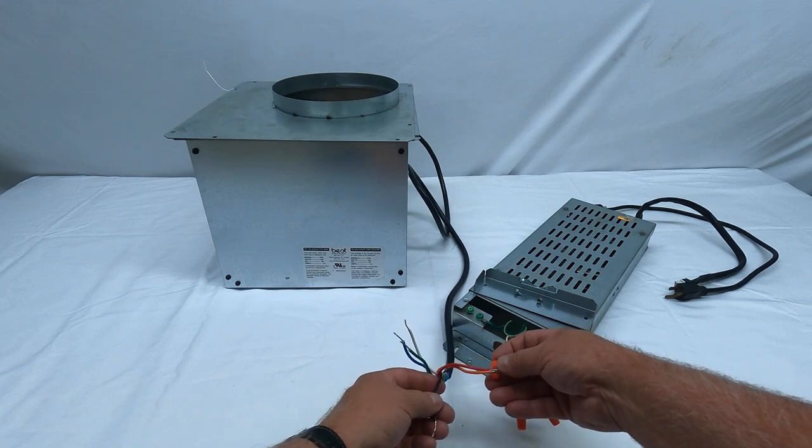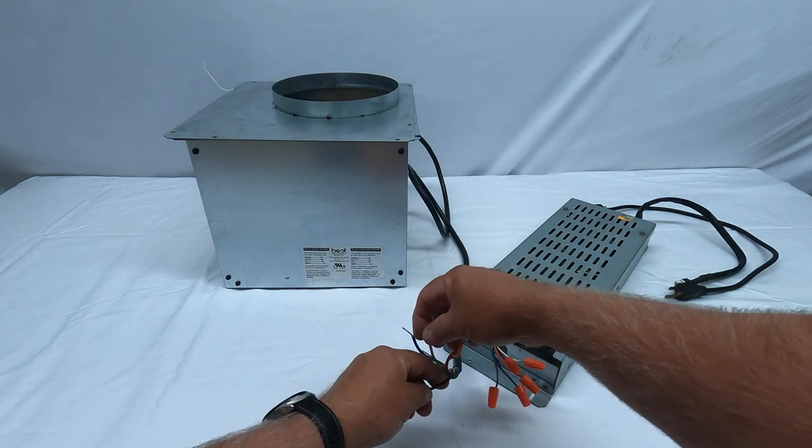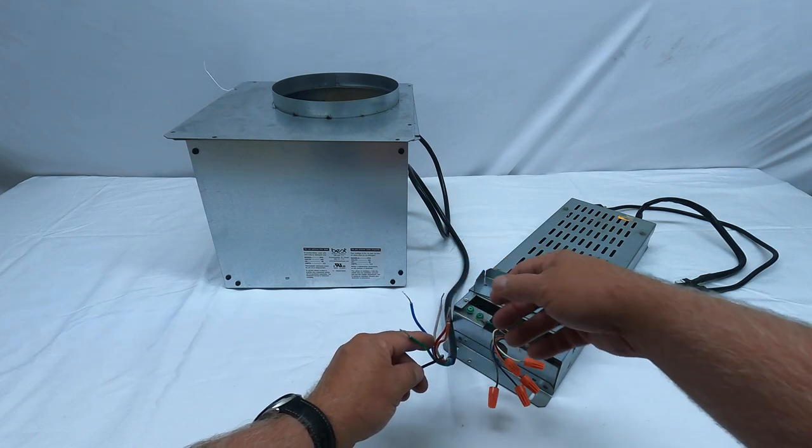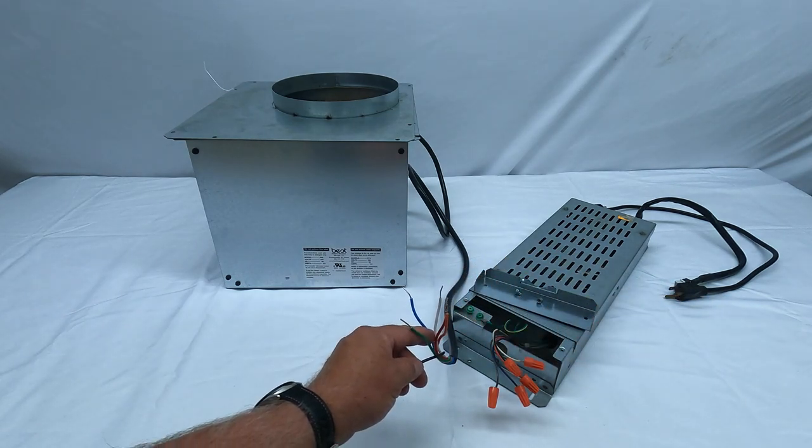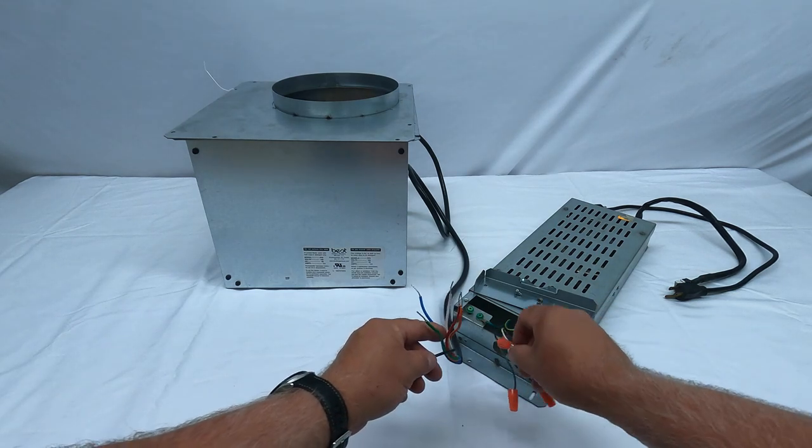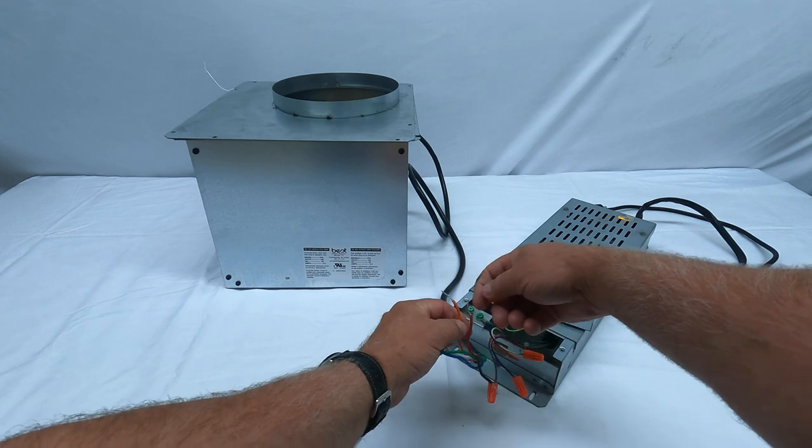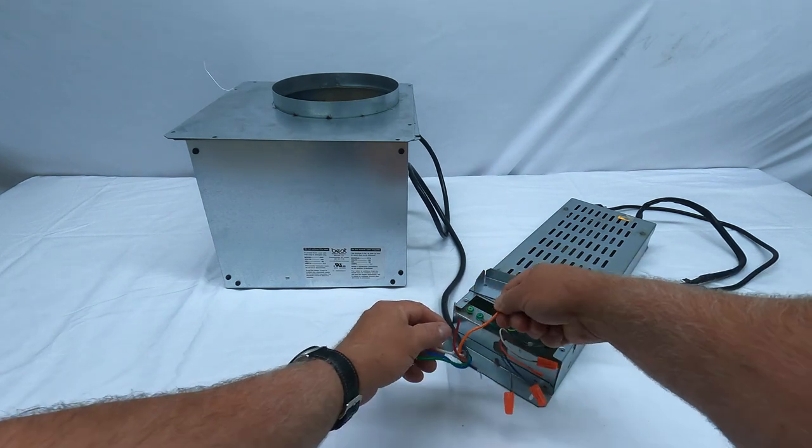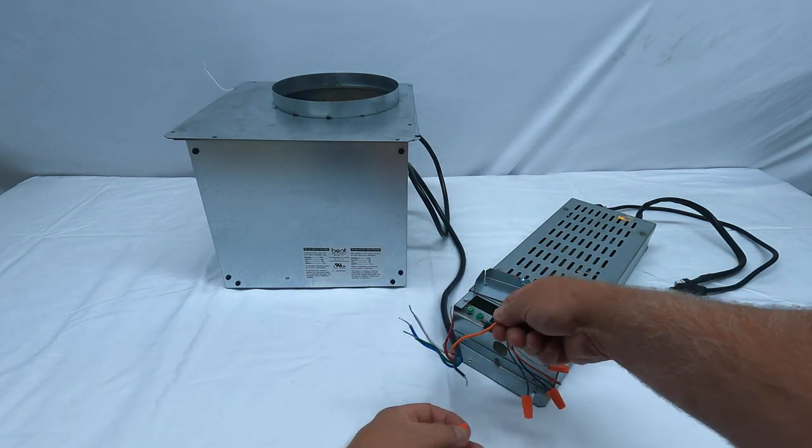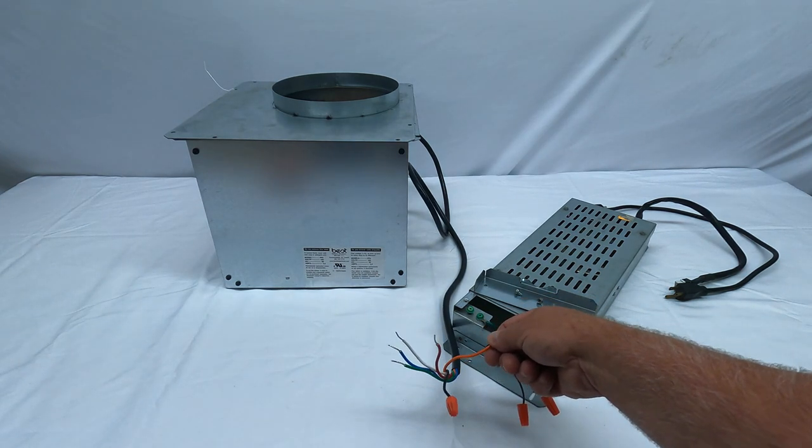And white to white. So I'm going to repeat it one more time because it's a little confusing. You're going to take green to green, blue to blue, red to gray, orange, orange and the black from the electrical assembly, and you're going to put a wire nut on this black wire coming from the PF6 blower, and white to white. And that will limit your speed to 400 CFM.